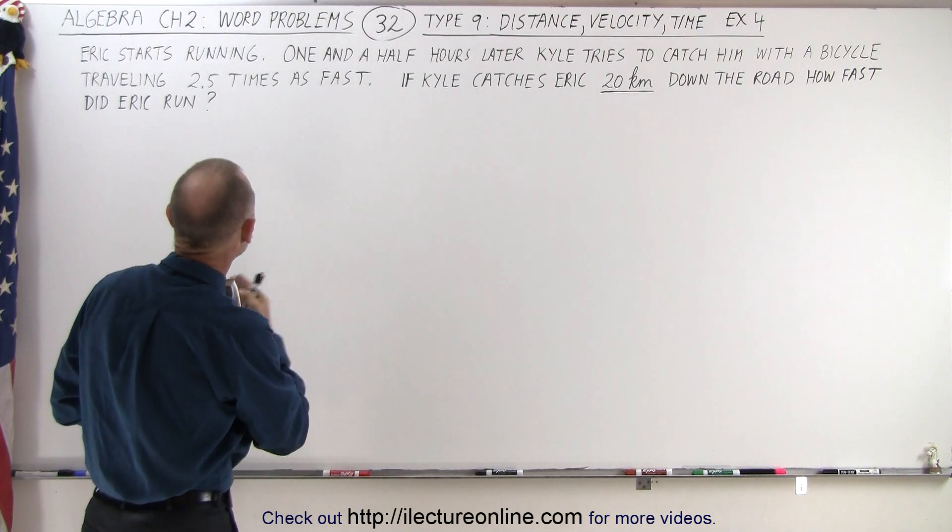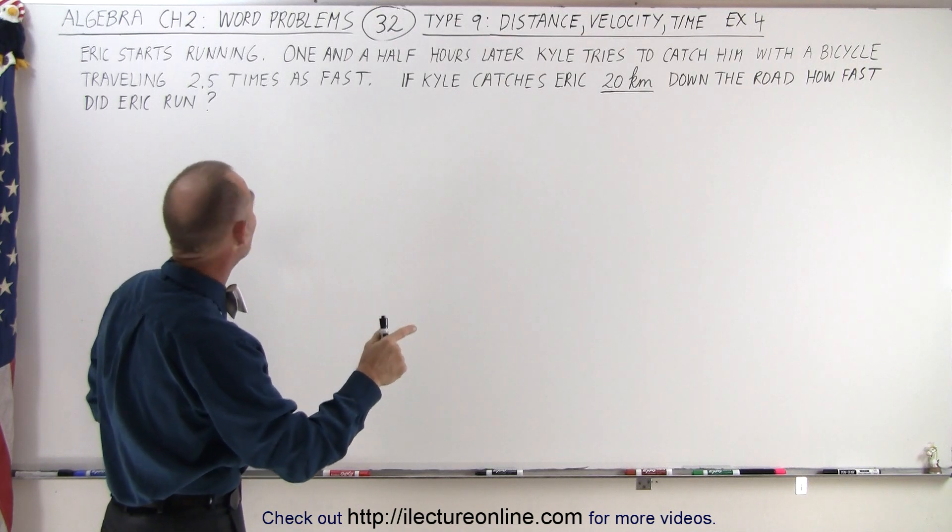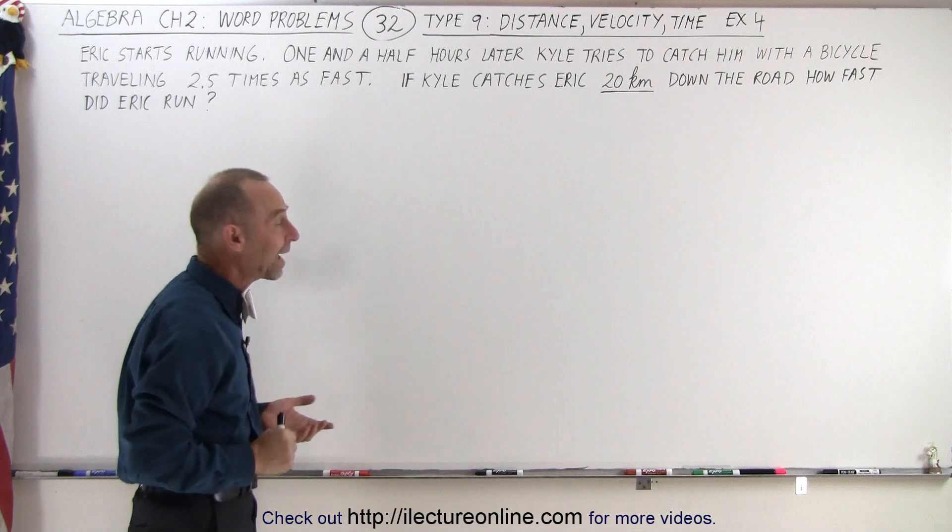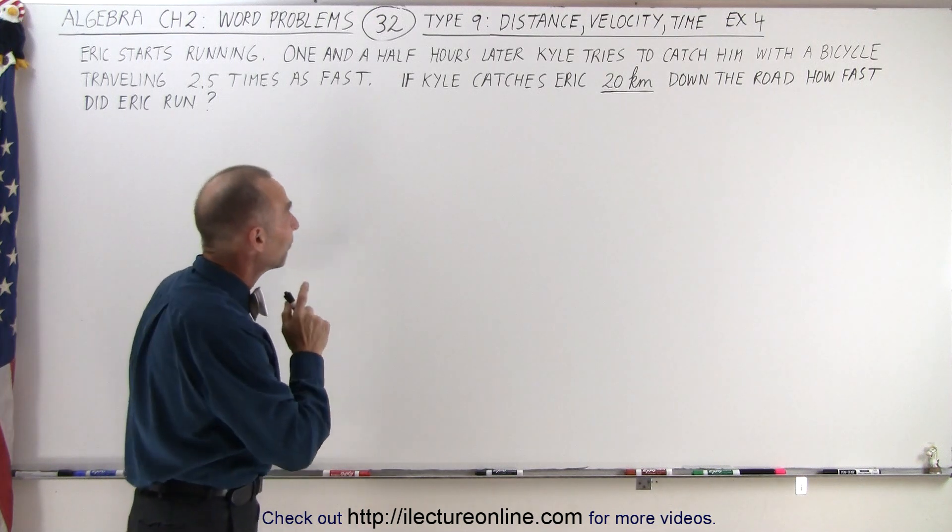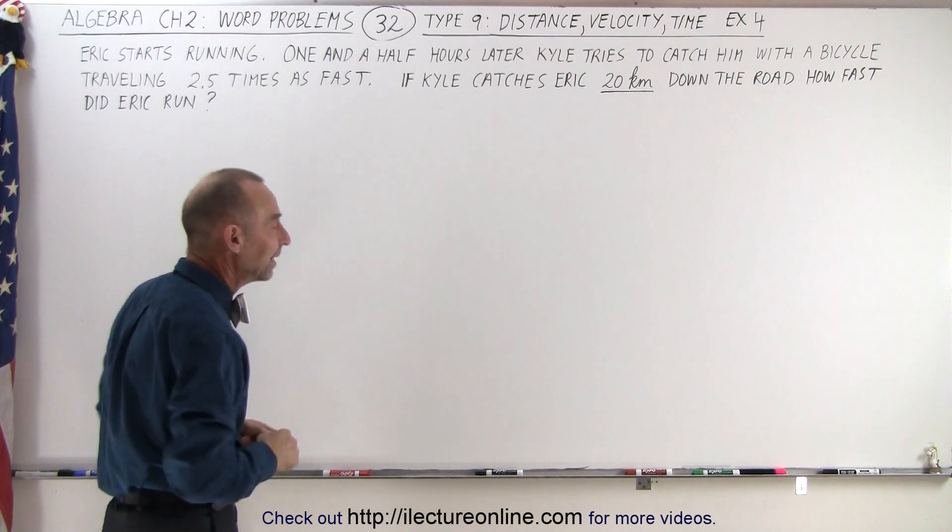The problem reads: Eric starts running. One and a half hours later, Kyle tries to catch him with a bicycle, traveling two and a half times as fast. If Kyle catches Eric 20 kilometers down the road, how fast did Eric run?